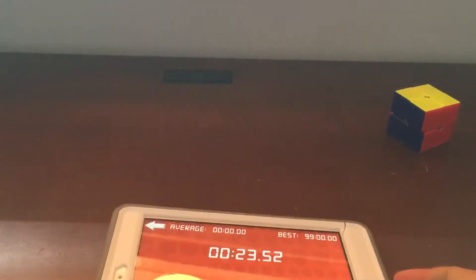You guys probably know with an average of five, you have to get rid of the worst time and the best time. So I'm just going to write this down. 23.52. Okay, next solve.